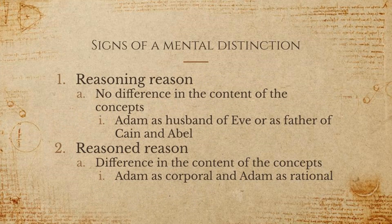Then we have two signs of the mental distinction. If it is a distinction of reasoning reason, the sign is that there's no difference in the content of the concepts. This will just be: Adam is husband of Eve, Adam is father of Cain and Abel, Adam is subject or predicate — the idea is the same, and it's relations extrinsic to him which are different. Then there is reasoned reason, which will have difference in the content of the concepts applied to Adam — so Adam is corporal or Adam is rational. And that covers everything in the second section of Suarez's treatise.